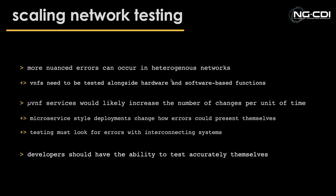As we further increase network heterogeneity, we introduce more complex errors as physical and software network devices more frequently interact in the production network, and testing those interactions is relatively complex. Also, as you break down software-based network functions into smaller units — micro-VNFs — network infrastructure faces more challenges seen by cloud software providers as microservices gained popularity, such as handling the increased rate of updates, both in number of different services and the frequency of the more specialized smaller units being updated.